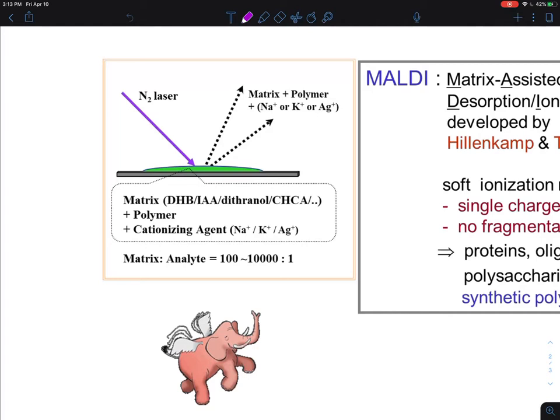If you use this matrix with different combinations, with a little bit of metal cation agent, and the matrix is about 100 to 10,000 times more than the polymers, you mix them. How you mix it is another art. By using high power nitrogen lasers and you shoot it, things will come out from the surface.